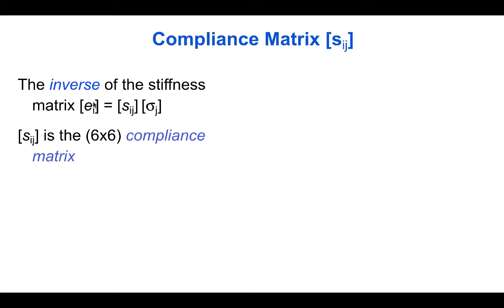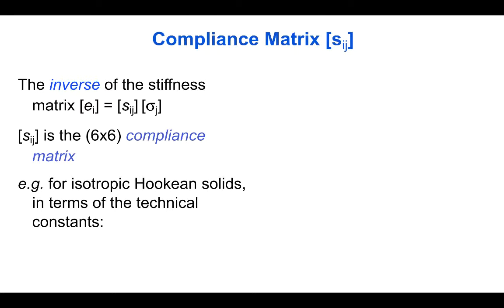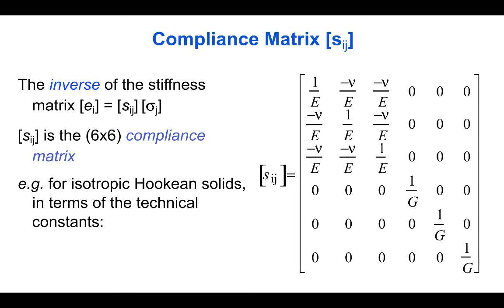We can also look at the inverse relationship between strain and stress, which is given by the compliance matrix. The inverse of the stress-strain relation is the strain-stress relation, in which the strain is equal to the compliance matrix times the stress. If the stress-strain relationship is linear it must be invertible, so we can find the compliance matrix S, which is also a six by six matrix. For an isotropic Hookean elastic solid, written in terms of the technical constants E and nu instead of the Lamé constants lambda and mu, the reciprocal of Young's modulus and the reciprocal of the shear modulus appear in the compliance matrix.